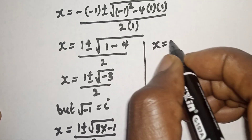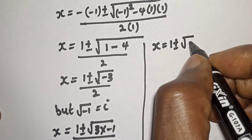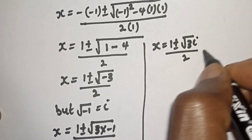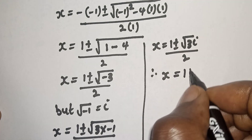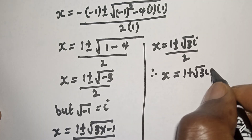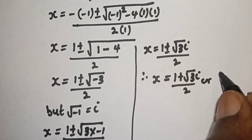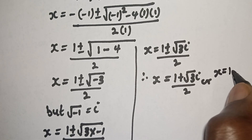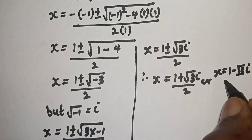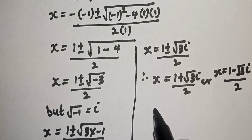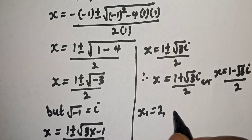So S is equal to 1 plus or minus square root of 3 times i, over 2. Therefore, S is equal to 1 plus square root of 3 i over 2, or S is equal to 1 minus square root of 3 i over 2. Our final answers are S is equal to 2.